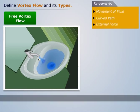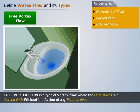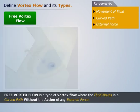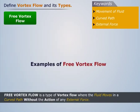Thus, free vortex flow is a type of vortex flow where the fluid moves in a curved path without the action of any external force. Another example of free vortex flow is the flow of water in a whirlpool.